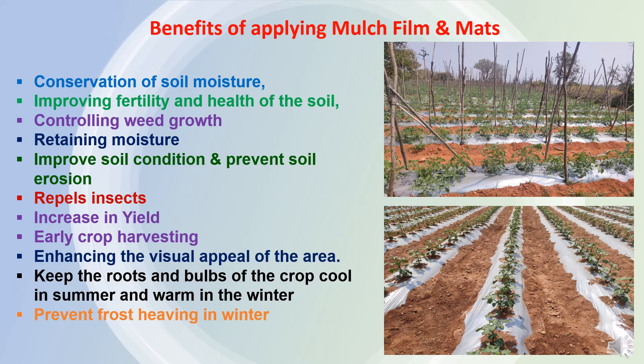Benefits of applying mulch film and mats. Mulching plays an important role which can be described as conservation of soil moisture, because there will be control of evaporation as the soil is not directly exposed to sunlight. So there will be moisture conservation. There will also be improvement in soil fertility and health of the soil.